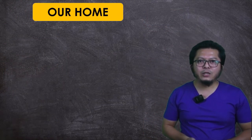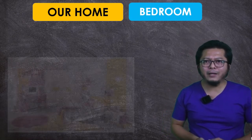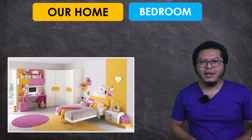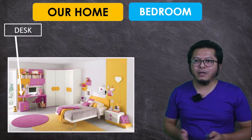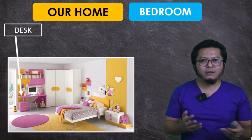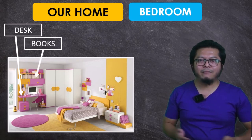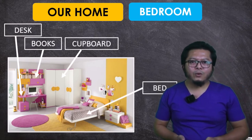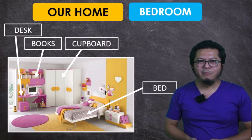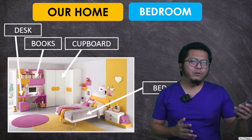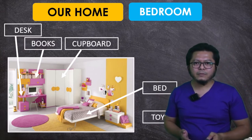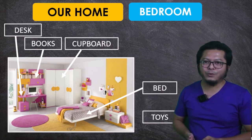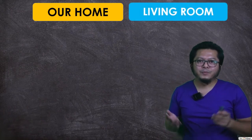Starting with the bedroom — this is an example of a bedroom. Things we have in our bedroom include a desk, books, a cupboard, a bed, and maybe a window or fan. More or less the same across homes. For kids like you, you usually also have toys in your bedroom.